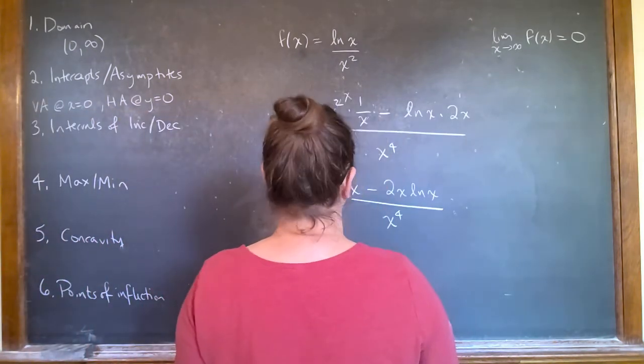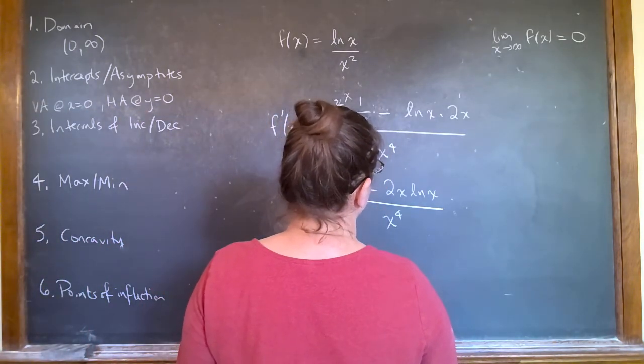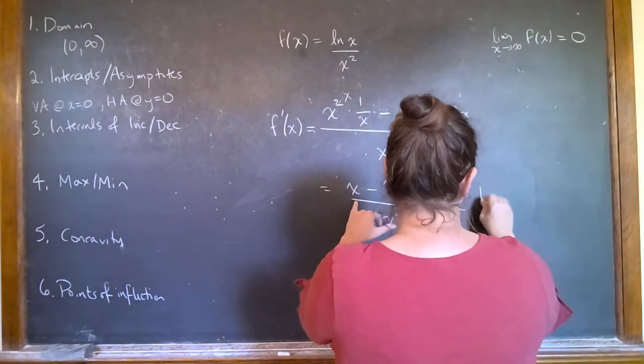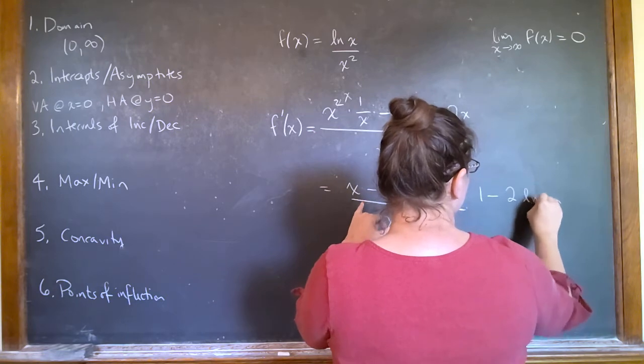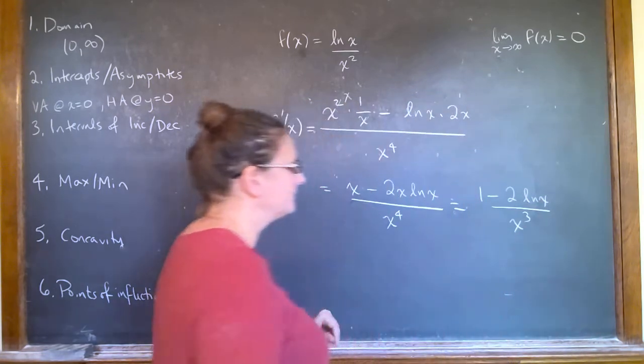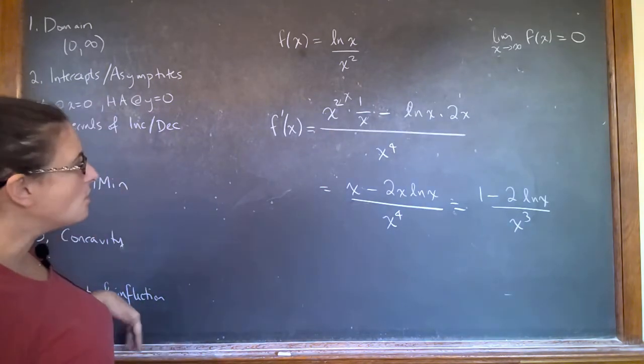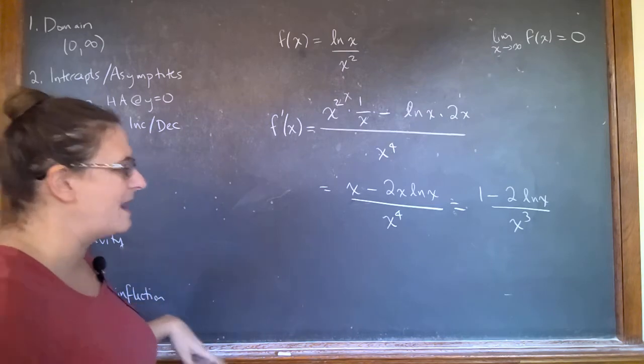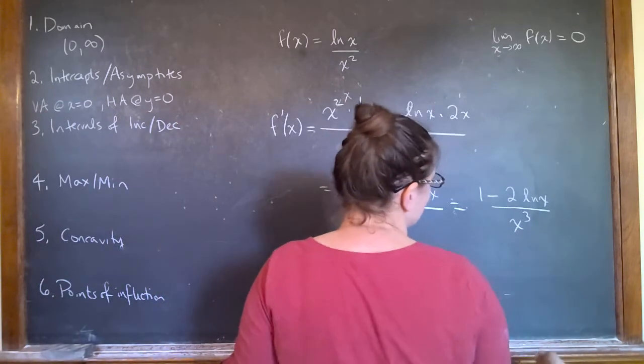So I have x minus two x natural log of x over x to the fourth. So I have one minus two natural log of x over x cubed. So we know already we have the asymptote at zero. And that's where we start anyway. We don't worry about that. Zero wasn't on the domain anyway.